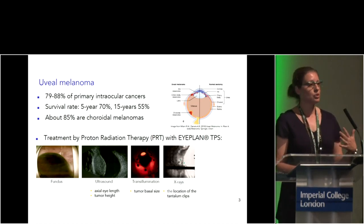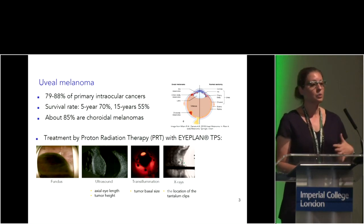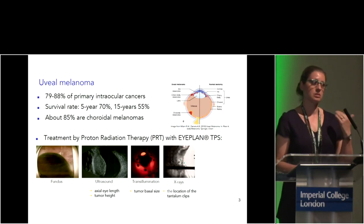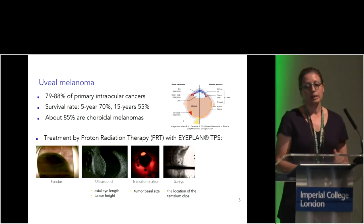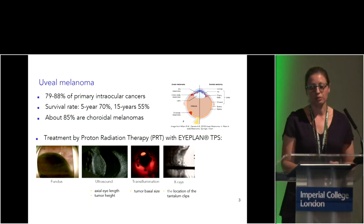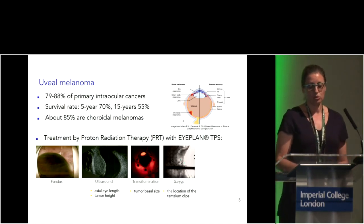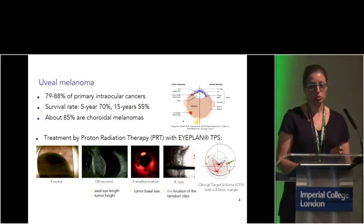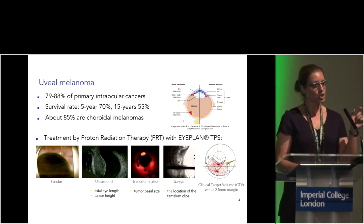At a certain point in the evaluation of the patient, when they are prepared to get the therapy, they will have surgery under general anesthesia where tantalum clips are attached around the tumor border. From transillumination, they measure the tumor basal size, another marker that has to be put in the plan. On the day of treatment, they will have x-rays to localize these clips according to the axis of the eye and to situate the tumor. All this is included with manual delineation of the tumor border, and due to the uncertainty of these measurements, they add a margin of 2.5 millimeters that they will irradiate as well.